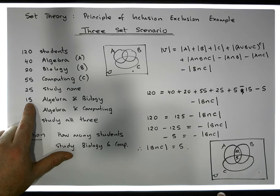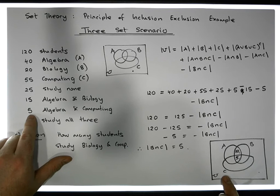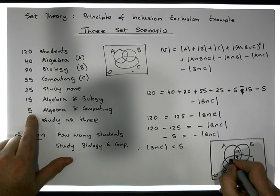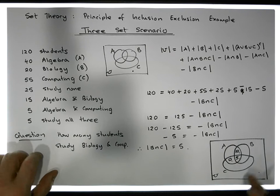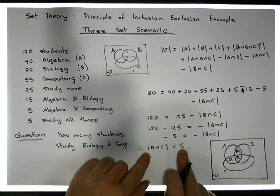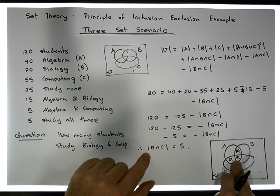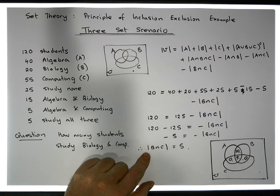Let's do A intersection with C. How many study algebra and computing? Well there's five, but we've already accounted for five of them, so there must be zero in this section of the room. How many study biology and computing? Well there's also five of them, so we've already accounted for five in here, so there must be also zero in that part of the room.